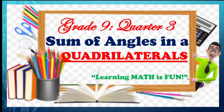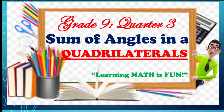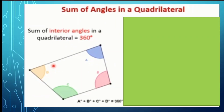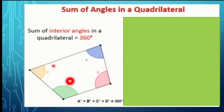Sum of angles in quadrilaterals. For the sum of the interior angles in a quadrilateral, that is always equal to 360 degrees. So just like in our illustration, we have here angles A, B, C, D.